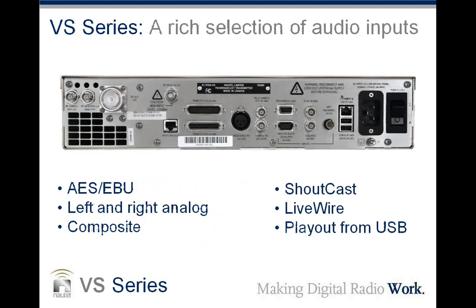The main thing people talk about with the VS series is the audio input choices. You can feed this transmitter AES-EBU, left and right analog, composite, shoutcast, live wire, and it can play from a USB port as well. This is the back of the 300-watt transmitter — all of these ports are available on the back. This is the network port, which is how you drive the AUI but also how you feed in shoutcast and live wire audio inputs.